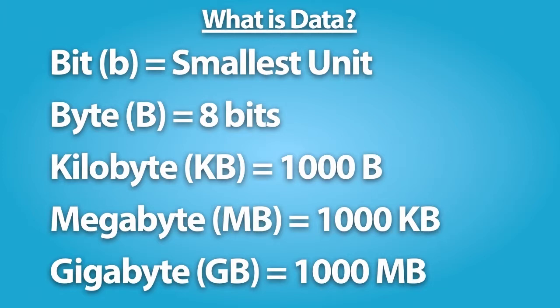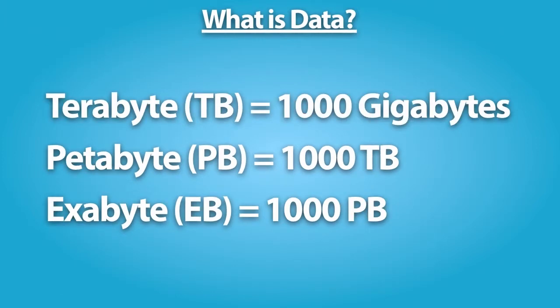A megabyte is 1,000 kilobytes, about a small book. A gigabyte is 1,000 megabytes, which represents 10 filing cabinets. A terabyte is 1,000 gigabytes — this is 3.6 billion photos, 300 hours of video, or 1,000 copies of the Encyclopedia Britannica. Ten terabytes could contain the entire printed collection of the Library of Congress.